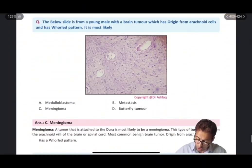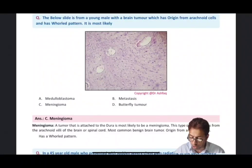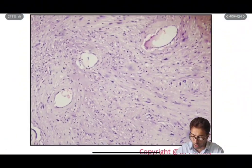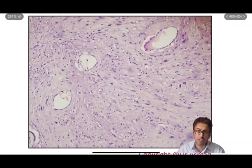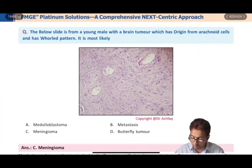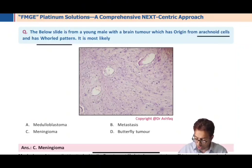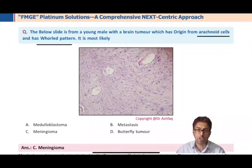Moving to the next question, which is an image-based question. The slide shown is from a young male with a brain tumor that has its origin from arachnoid cells and has a whorl appearance. You can see the whorl appearance of the tumor in the enlarged figure. The options given are: medulloblastoma, meningioma, metastasis, and butterfly tumor.